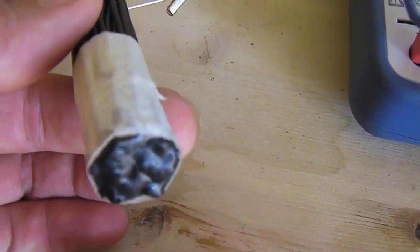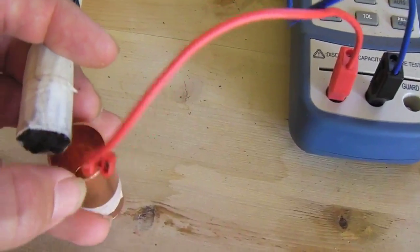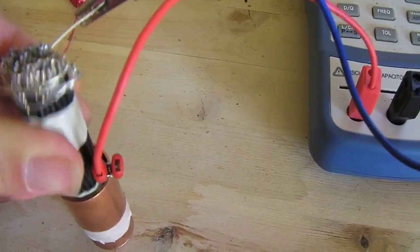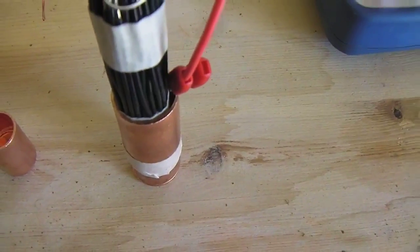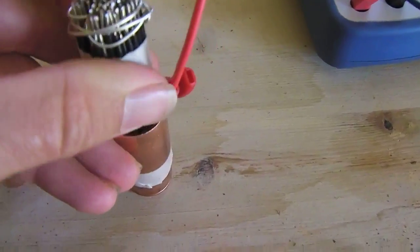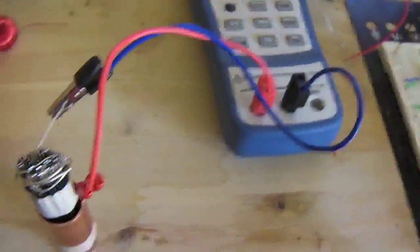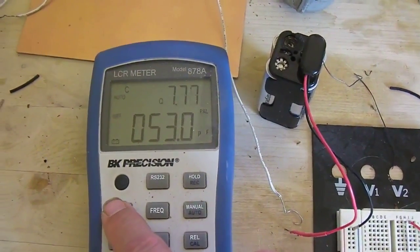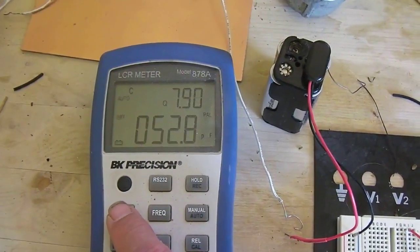I'm definitely interested to see what happens when I add the salt water, if that increases the capacity. But already this is nice because it's a very high voltage variable capacitor. According to this meter, it doesn't have very good Q. 7.8, I think that's really low. I'm not really sure.